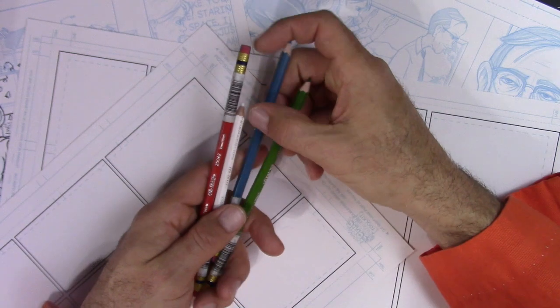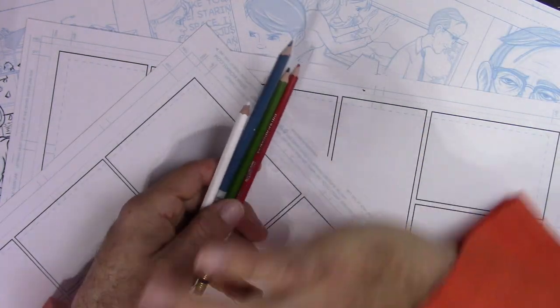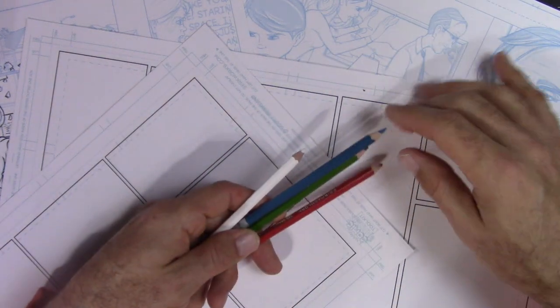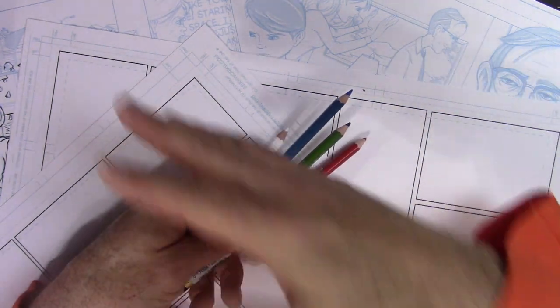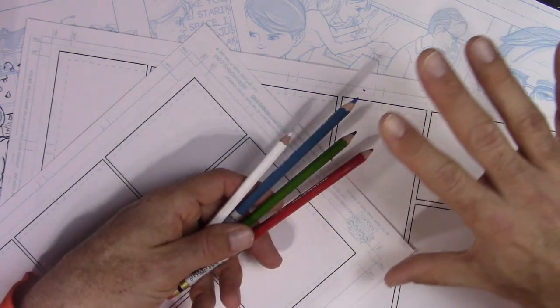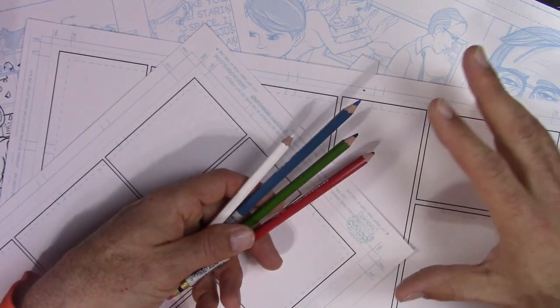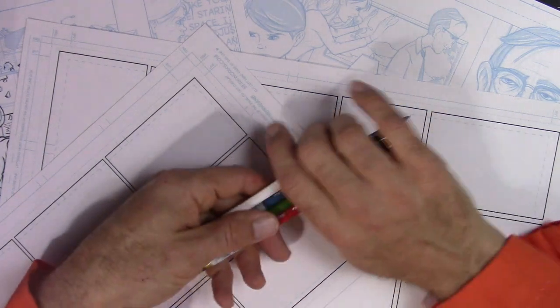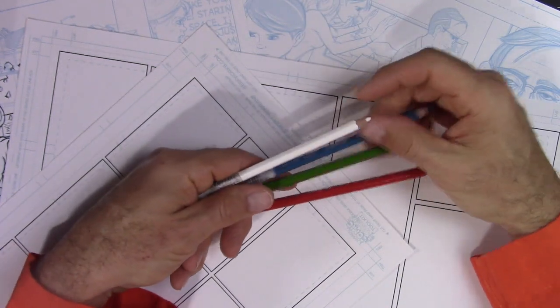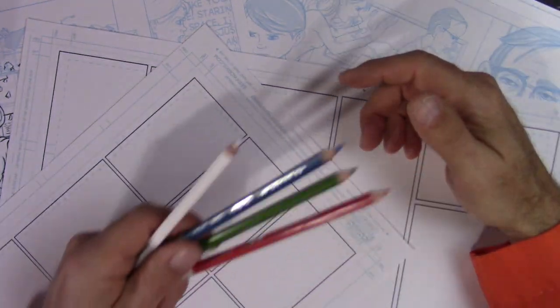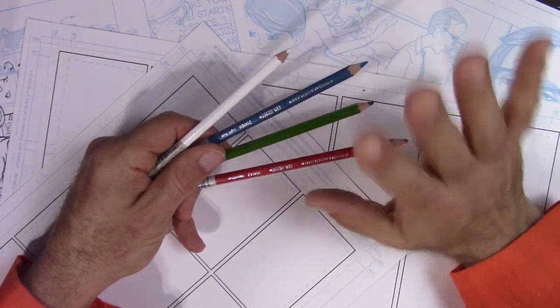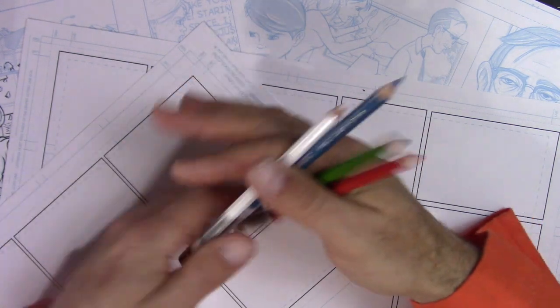I'll start with penciling. For sketching, a lot of times I'll use these Prismacolor Col-Erase Pencils. I don't usually use these when I'm drawing my comic book pages. I'm going to be talking about all analog tools. I do also do digital comics and I'll briefly touch on some of those.